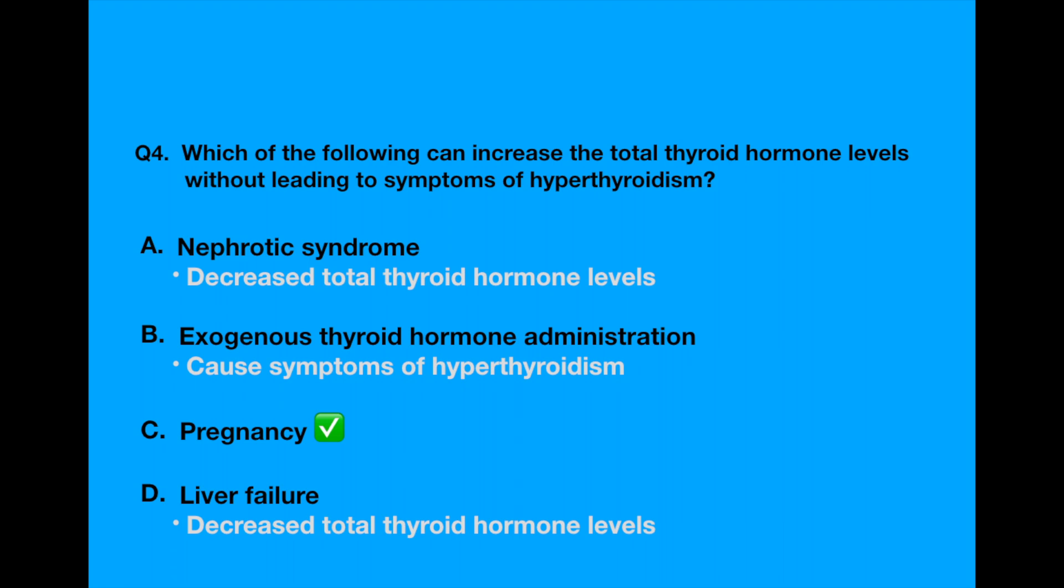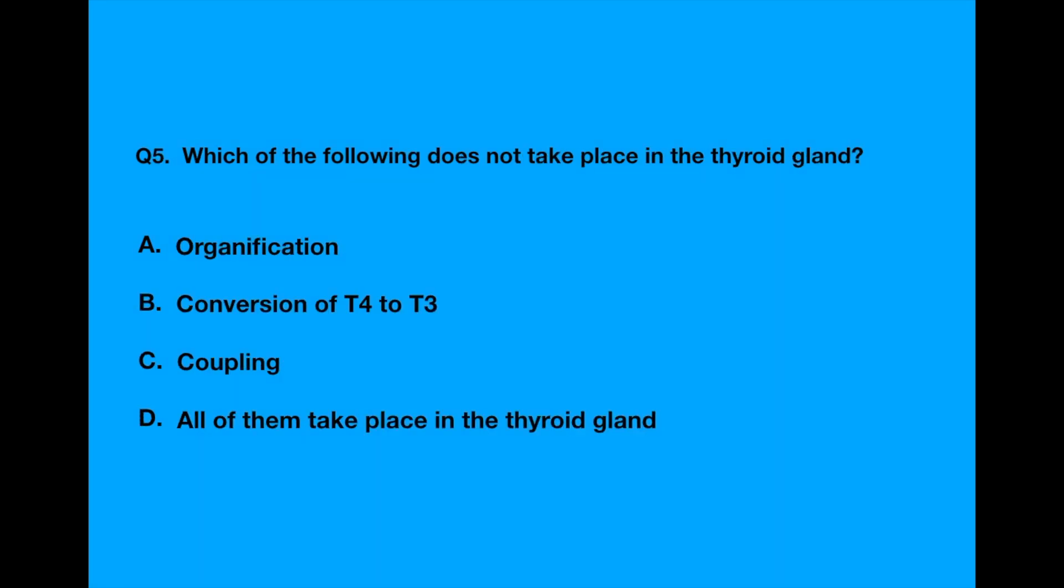Question number five. Which of the following steps does not take place in the thyroid gland? Option A, organification. Option B, conversion of T4 to T3. Option C, coupling. Option D, all of them take place in the thyroid gland.